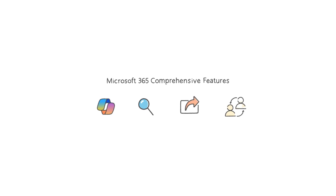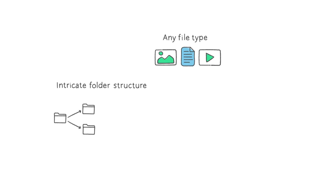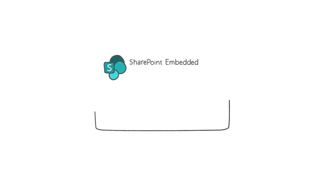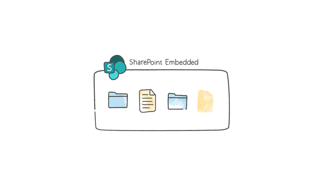It surfaces Microsoft 365's comprehensive features to work with your app's content, including Microsoft 365 Copilot, search, sharing, and Office document co-authoring. SharePoint Embedded supports any file type, intricate folder structures, and all standard business continuity features. Additionally, documents within the embedded partition also adhere to the Microsoft 365 tenant's policies, including Microsoft Purview's comprehensive compliance solutions.